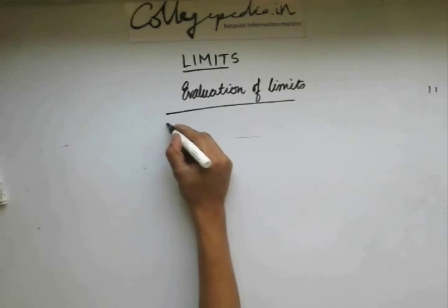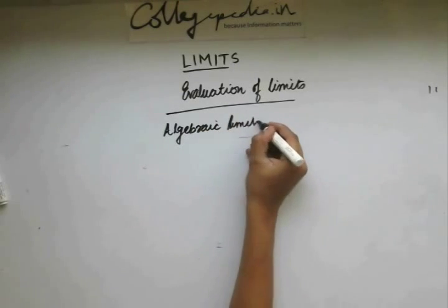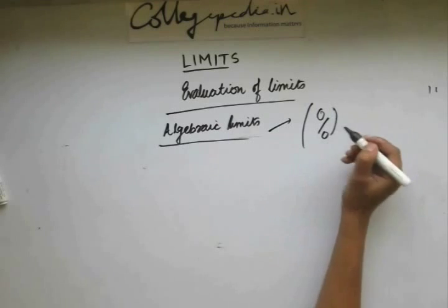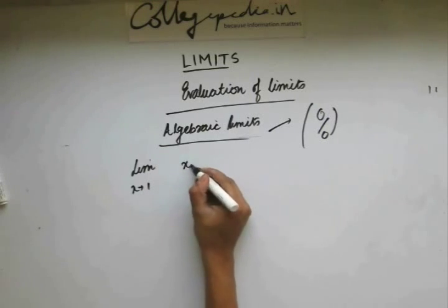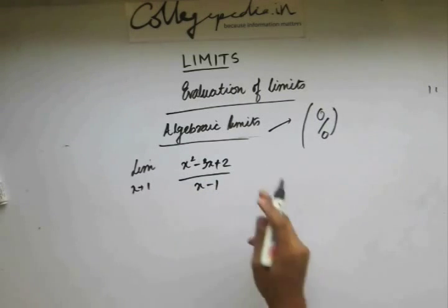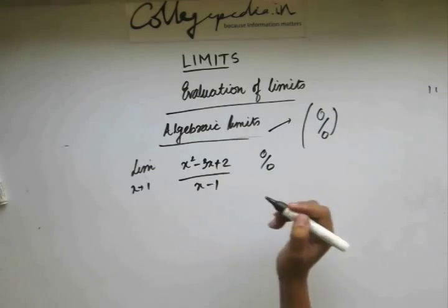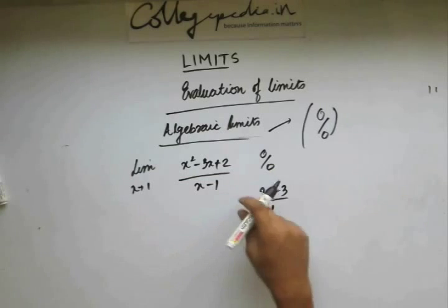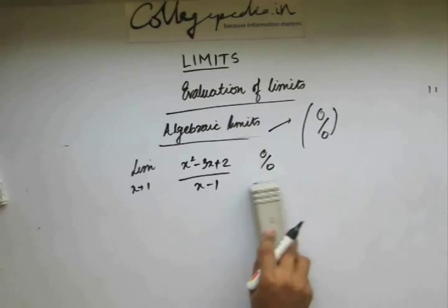The main topic is algebraic limits. Let's first take the case when the algebraic expression takes the 0/0 form. Using L'Hospital's Rule: differentiate the numerator and denominator separately, then put x = 1. The expression takes the value of −1, so the limiting value is −1.